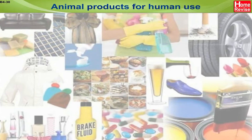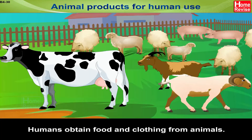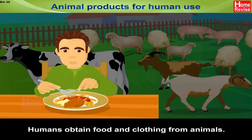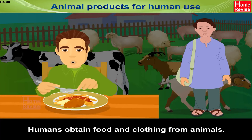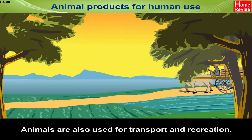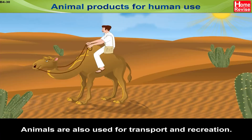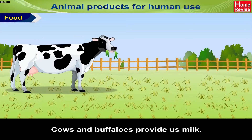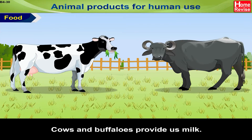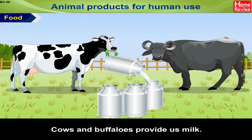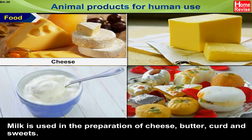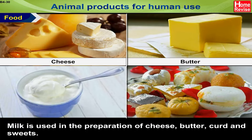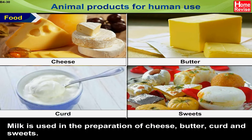Animal Products for Human Use. Humans obtain food and clothing from animals. Animals are also used for transport and recreation. Food: Cows and buffaloes provide us milk. Milk is used in the preparation of cheese, butter, curd, and sweets.